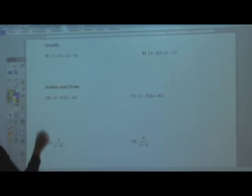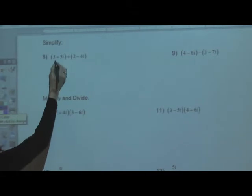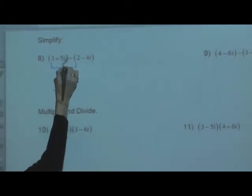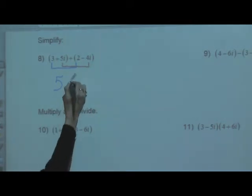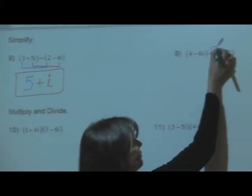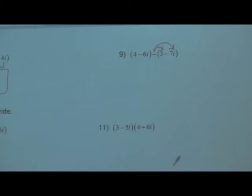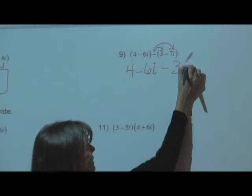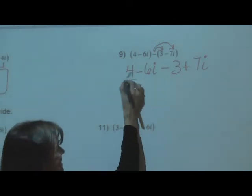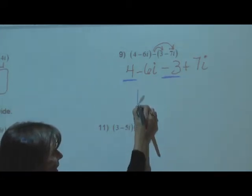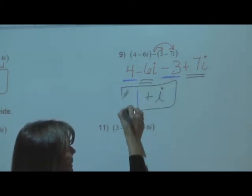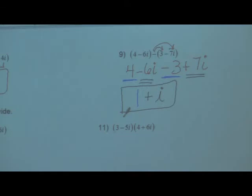When adding and subtracting complex numbers, put i's with i's and numbers with numbers. We have 3 plus 2 — that's 5. Then 5i minus 4i gives positive 1i. That's the answer, it's that simple. For the subtraction example, distribute the negative first: 4 minus 6i minus 3 plus 7i. Numbers: 4 minus 3 = 1. Imaginary parts: negative 6i plus 7i = positive 1i. Final answer: 1 plus i.